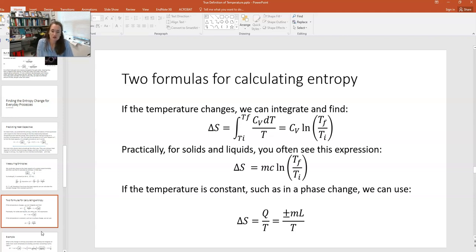Now you can also use this expression, ds equals q over T, and integrate it for something that happens like a phase change. Remember that for a phase change, the temperature is held constant, so it doesn't change during the phase change. And remember that in a previous lecture, the heat for a phase change is equal to plus or minus m times l, where m is the mass of the sample and l is the latent heat.